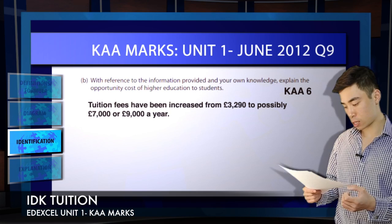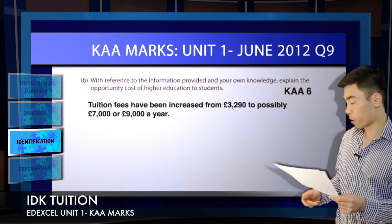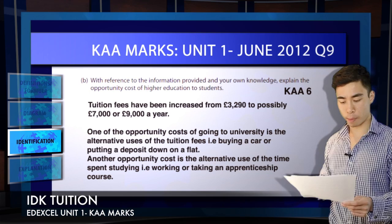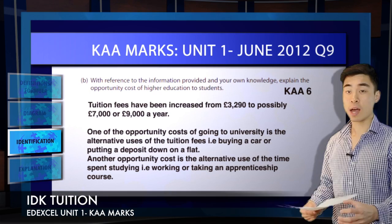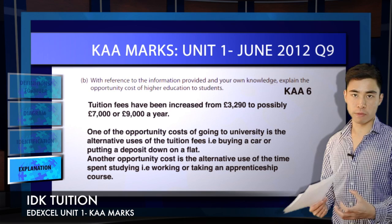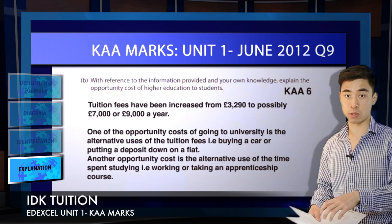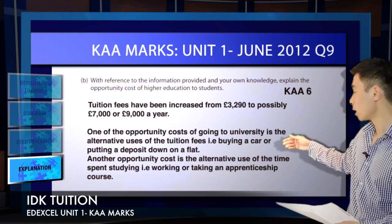There are actually two marks available for referring to the data for this question. Say we've picked up one mark for the definition, one for the diagram, and one out of two for data references — we still need to pick up another three marks for actually explaining the opportunity cost. Briefly, the opportunity cost of going to university includes the financial cost of paying £9,000 in tuition fees and also the cost in terms of your time.